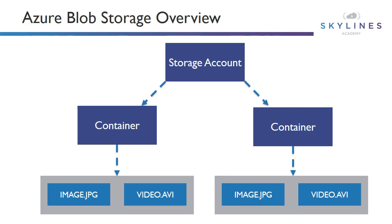What is a blob? A blob is a binary large object — think of it as your ones and zeros. These could be images, video files, random text files, or whatever they might be. But don't confuse them with files compared to an SMB file share, which has permissions and other things associated directly from a CIFS perspective. This is for storing large amounts of images, videos, etc.